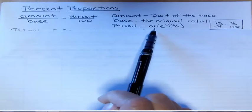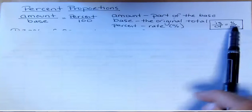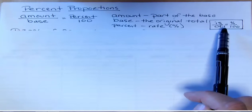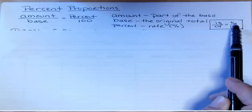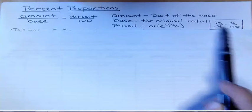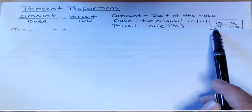You'll recognize it because of the percent symbol next to it. Sometimes when you do these percent problems, you can use 'is over of equals percent over 100.' The word 'is' is the amount, the word 'of' is the base, and then you have the percent symbol that helps you recognize the percentage.